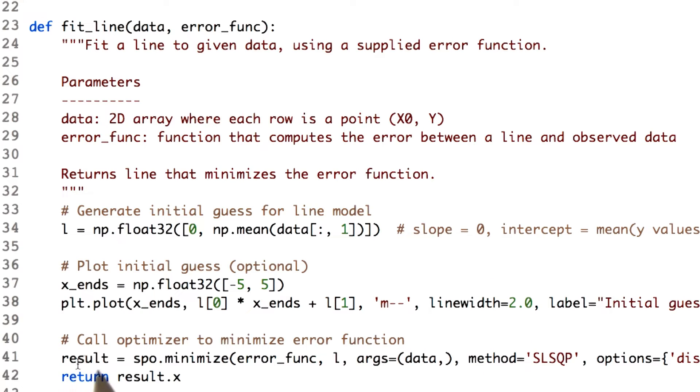But here really is the meat of the function, you've seen it before. So we call our minimize function with the error function. In other words, this is the function we're trying to minimize, our initial guess. And this is a parameter you haven't seen before.